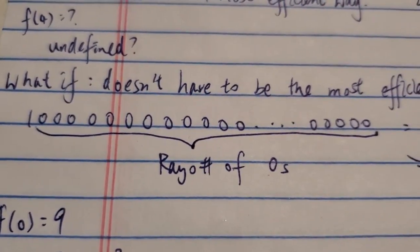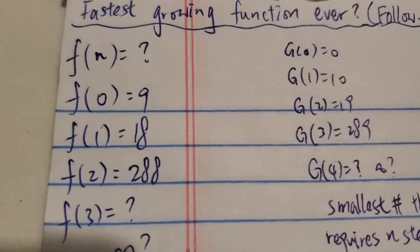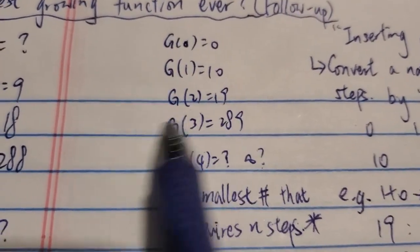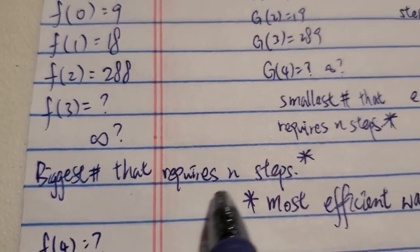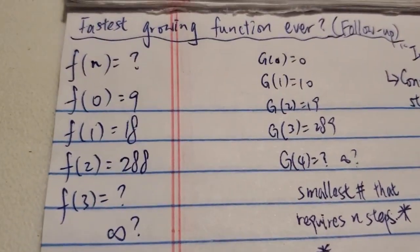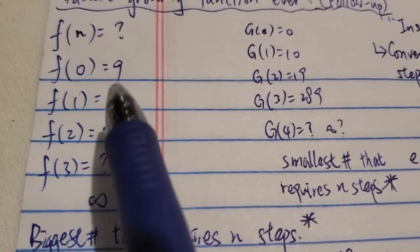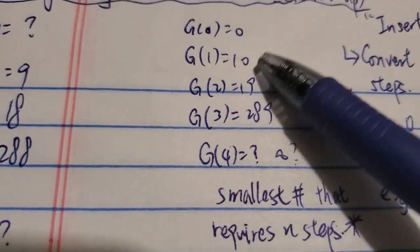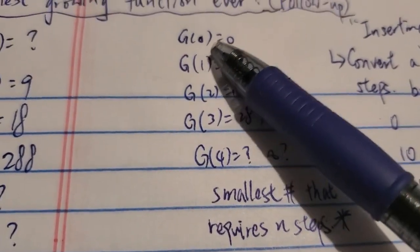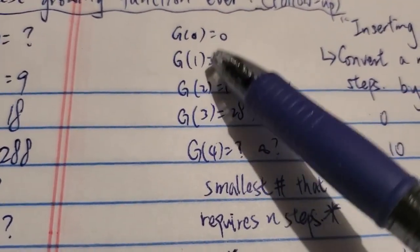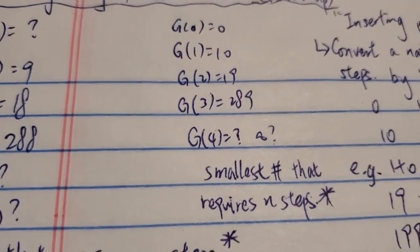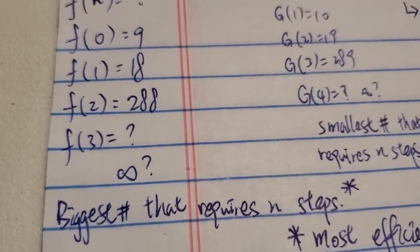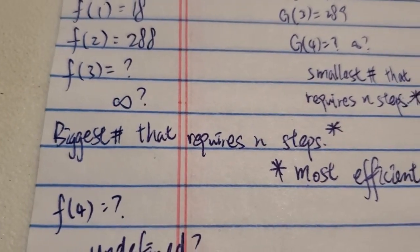This number is bigger than Rayo's number because it has Rayo's number of zeros. So I try to redefine this function a little bit. Instead of being the smallest number that requires n steps, I change it to the biggest number that requires n steps — again, most efficiently. So f0 in this case is 9, the biggest number that requires zero steps. In the original video, the smallest number requiring zero steps is obviously 0; one step is 10; two steps is 19; three steps is 289. But here, changing to biggest: f0 is 9, f1 is 18, f2 is 288.